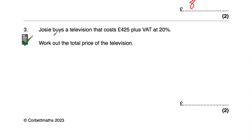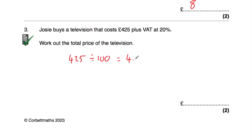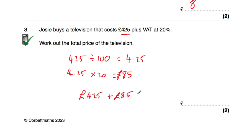Question three: Josie buys a television that costs £425 plus VAT at 20%. Work out the total price of the television. This is a calculator question. £425 divided by 100 gives 1% = £4.25. Multiplying by 20 gives 20% = £85, so the VAT is £85. Adding that on: £425 plus £85 equals £510. The total price of the television including VAT is £510.